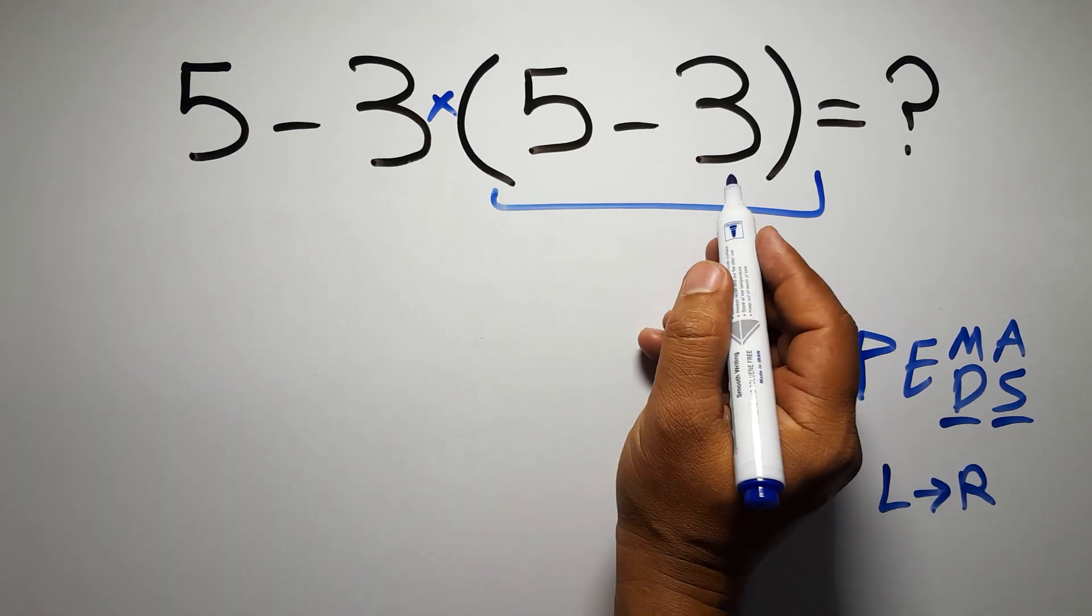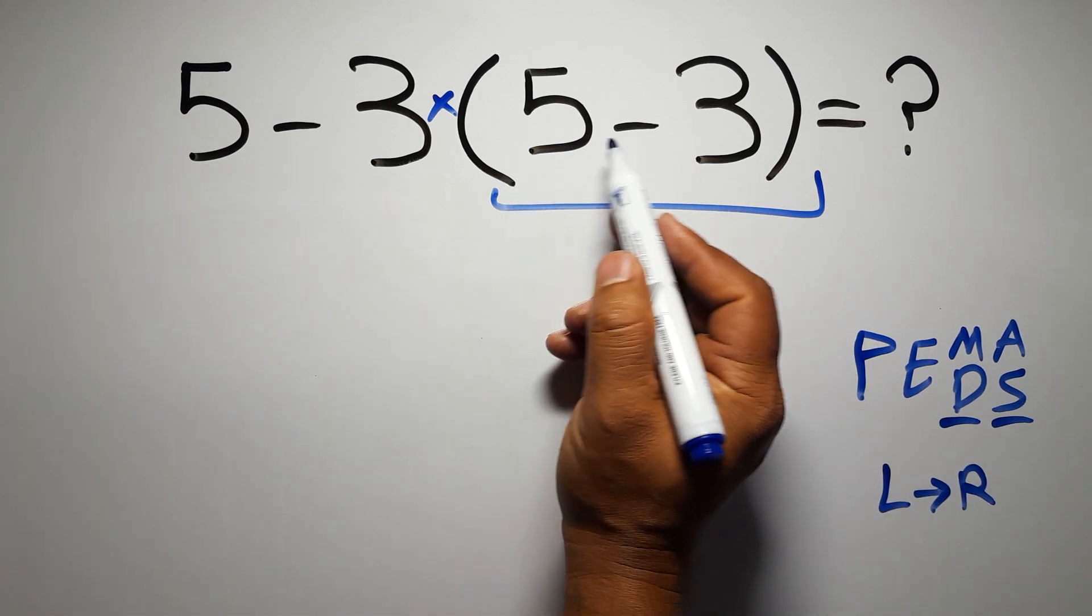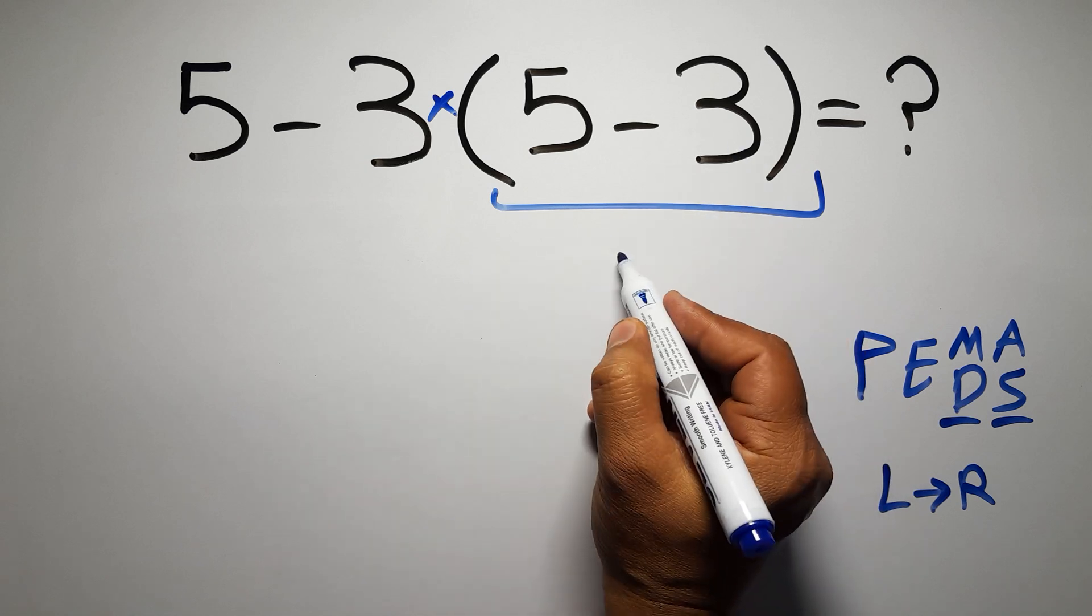So, first these parentheses. Inside these parentheses, we have 5 minus 3, which equals 2.